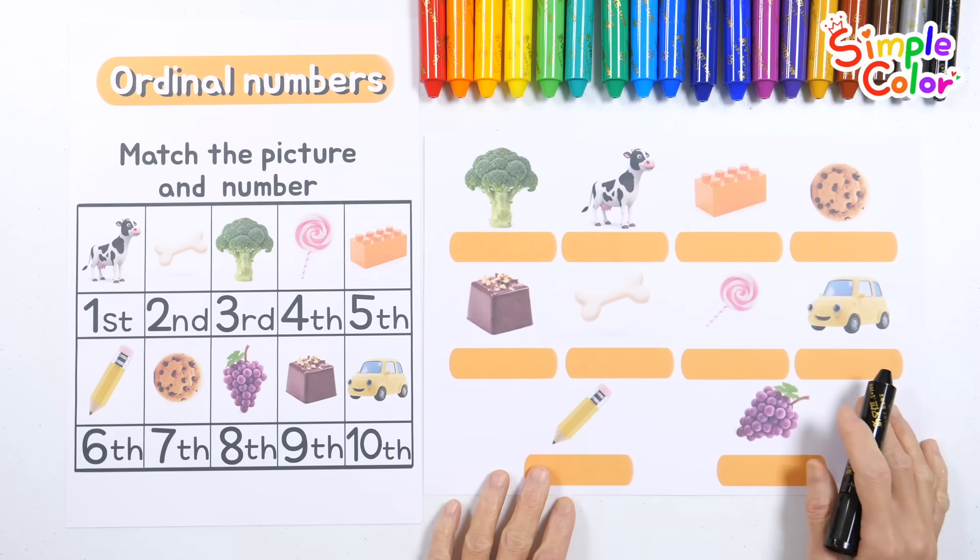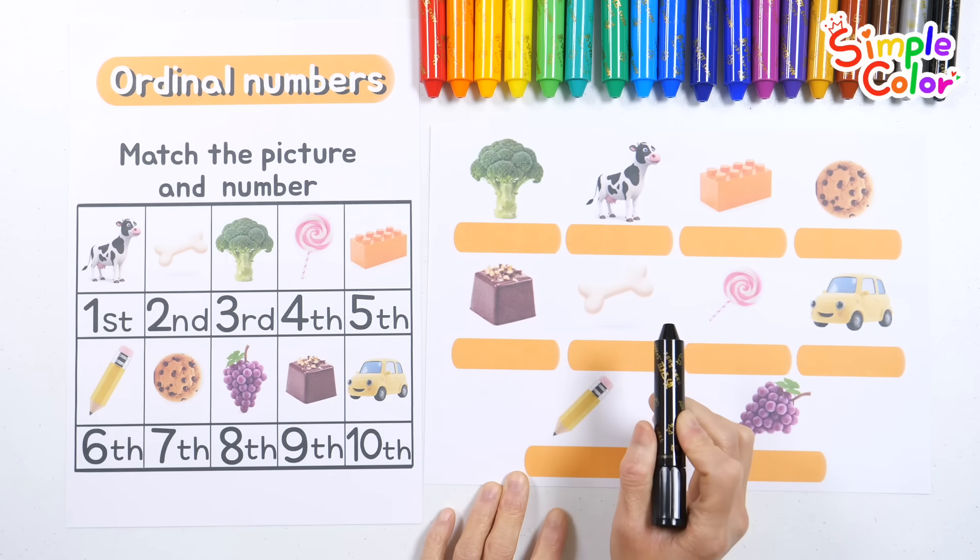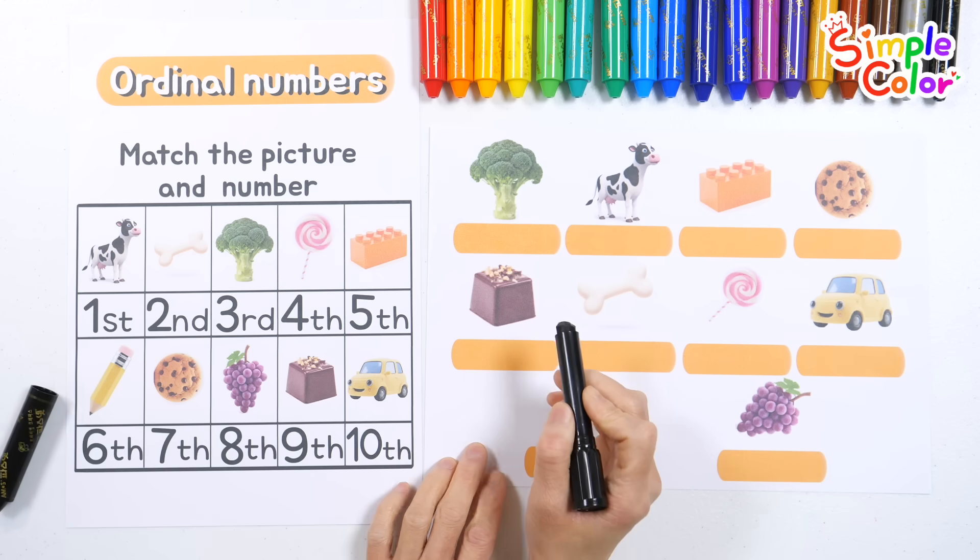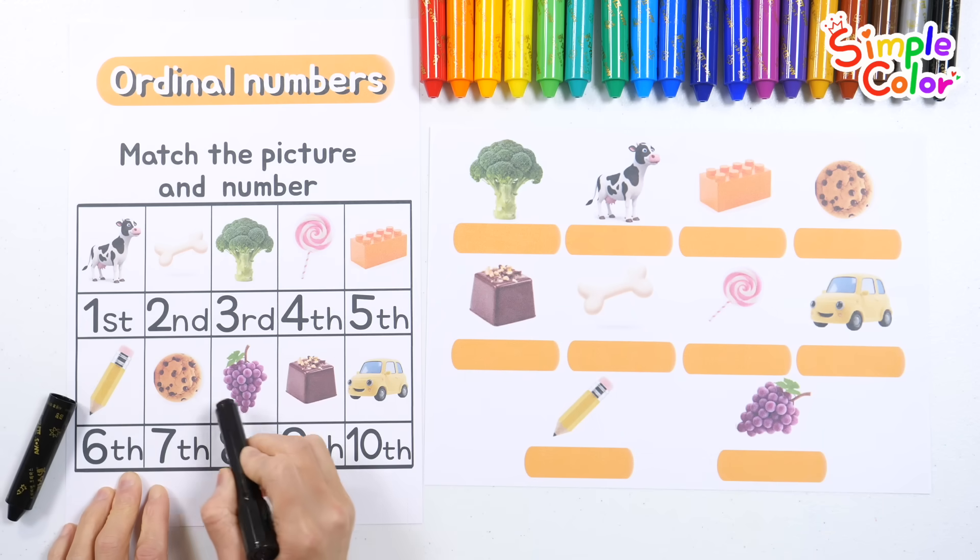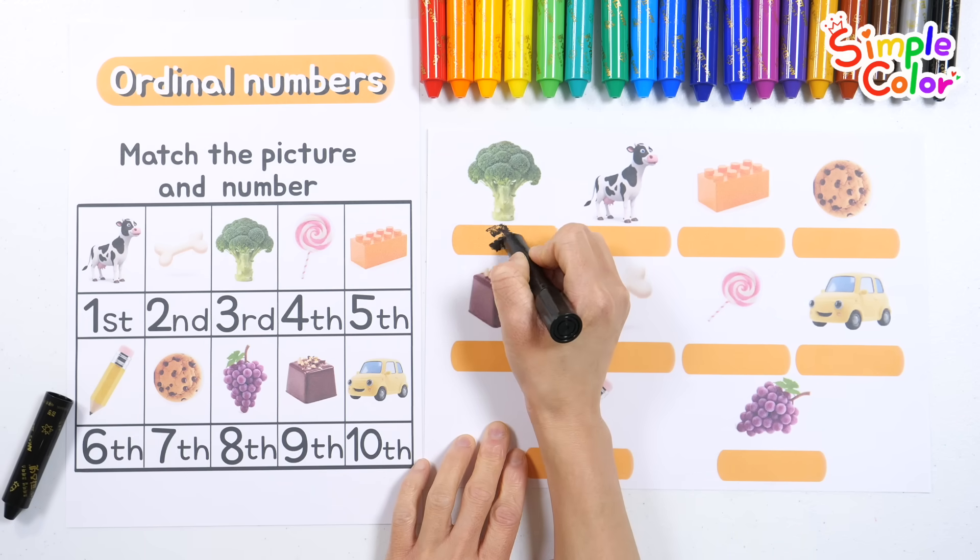Now, let's look at the pictures and write down the number for each one. Are you ready? Which number was the broccoli? Yes! It was the third one. Three.